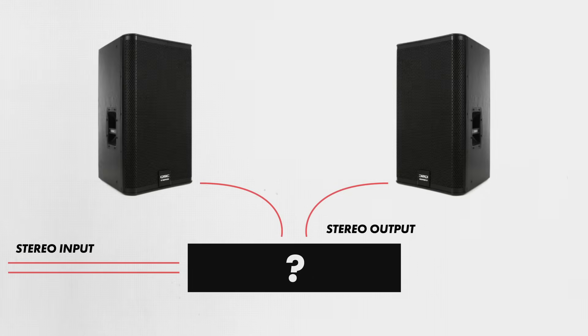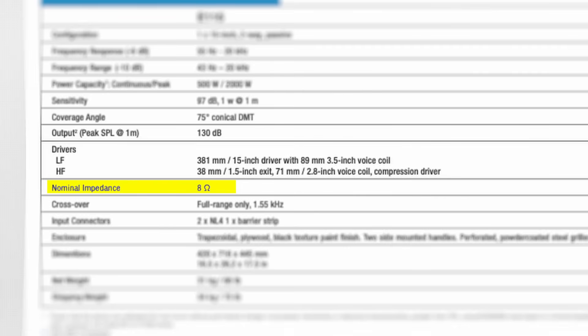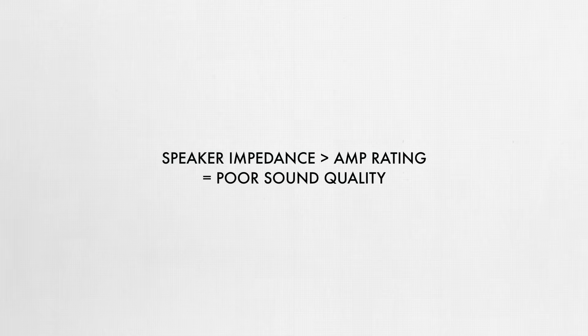Now that you know the nominal impedance and continuous power handling capacity of your speaker, it's time to choose an amplifier. Let's say I'm trying to find an amplifier to power two QSC E115 speakers, and we'll assume we'll only have one E115 speaker on each amplifier channel. I'll make sure that the amplifier is rated to operate at the speaker's nominal impedance, which is 8 ohms. If the impedance of the speaker is lower than the amplifier is rated for, it will probably cause the amplifier to overheat. But if the impedance of the speaker is greater than the amplifier is rated for, the sound quality and performance of the system will be negatively affected. The next step is to make sure the amplifier is capable of supplying enough power to the speaker. The continuous power rating of the E115 is 500 watts, but impedance and power are interrelated.